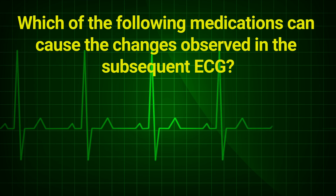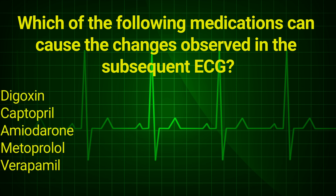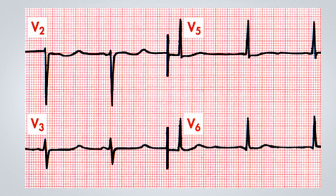Now on to the new clinical scenario. We will display several electrocardiograms and ask you which of the medications, from a list of alternatives, could potentially cause the changes in the ECG we're about to show. For the first ECG, we want to know which of the following medications might cause the electrocardiographic changes we'll observe. Our medication options are digoxin, captopril, amiodarone, metoprolol, and verapamil. Now, let's analyze this electrocardiogram.